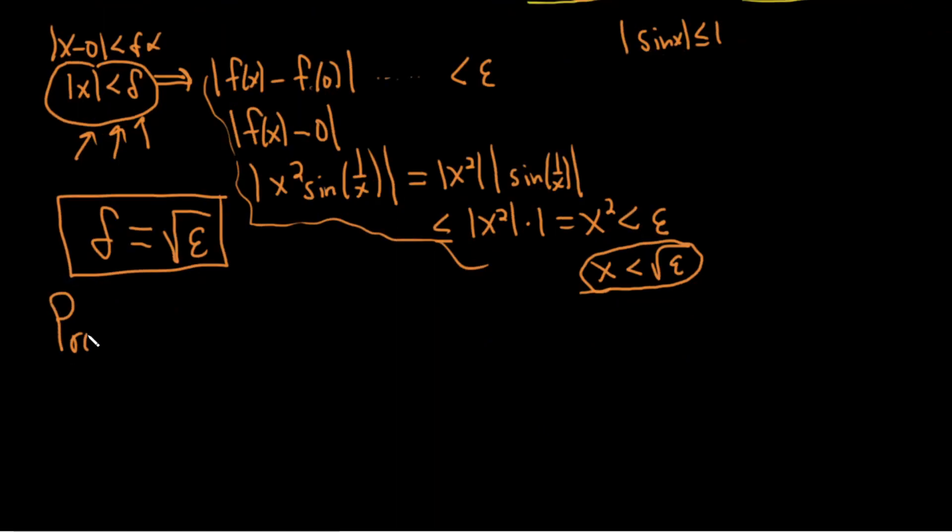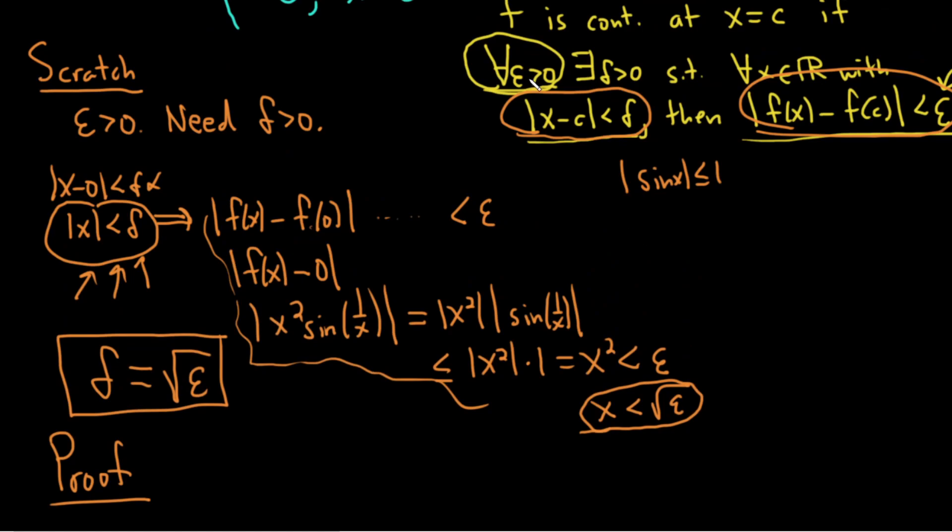So proof. So we'll start our proof by letting epsilon be greater than 0, because that's how the definition starts. We'll start by saying let epsilon be greater than 0. It could be any epsilon. So what we're showing will hold for all epsilon.